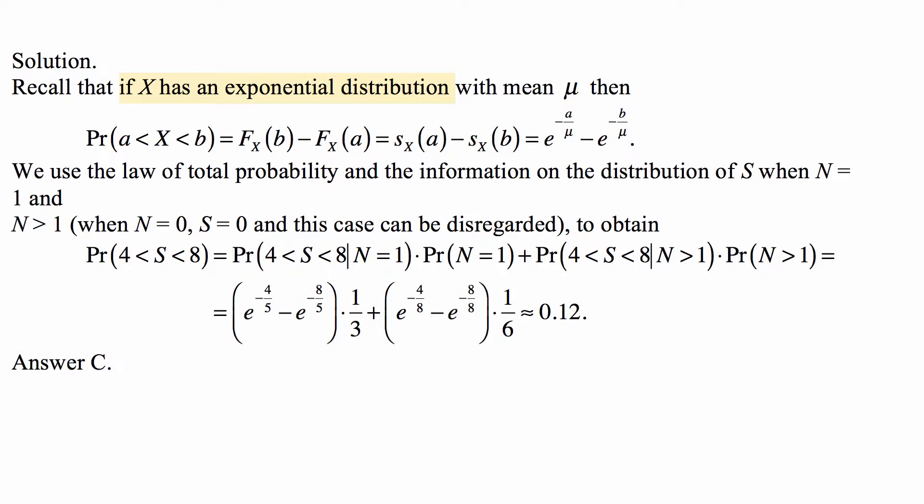The probability that S is between 4 and 8 is the probability that S is between 4 and 8 given that N is 1 times the probability that N is 1 plus the probability that S is between 4 and 8 given that N is more than 1 times the probability that N is more than 1. Based on that information about the exponential distribution, the probability that S is between 4 and 8 given that N is 1 is e to the minus 4 over 5 minus e to the minus 8 over 5, and that's multiplied by the probability that N is 1, which is 1 third.